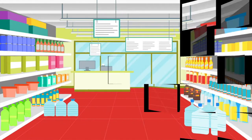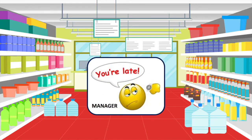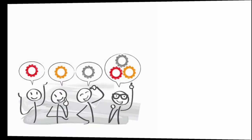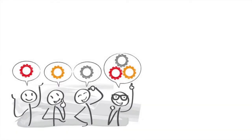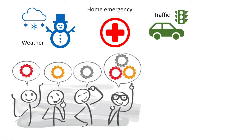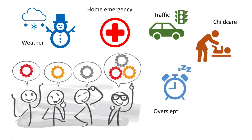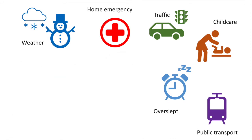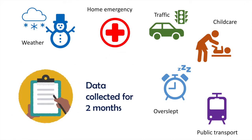Let's look at a simple non-medical example. You are the manager of a department store that has a problem with employee tardiness. You realize that before you can find solutions, you first have to understand what's causing the problem. You brainstorm with your team and through informal brainstorming with your staff, you identify six major categories of reasons employees are late: bad weather, home emergencies, traffic, childcare issues, oversleeping, and public transportation issues. You and your team want to understand the major — as opposed to the not-so-important — factors leading to tardiness.